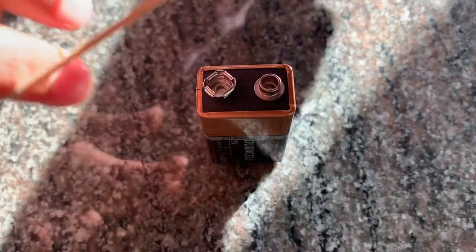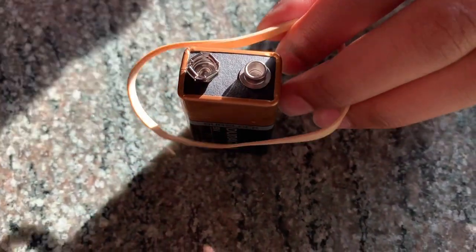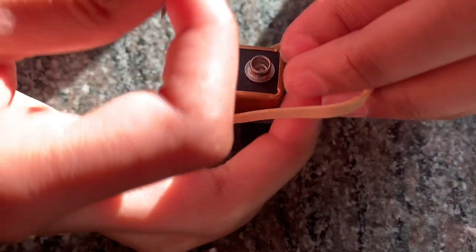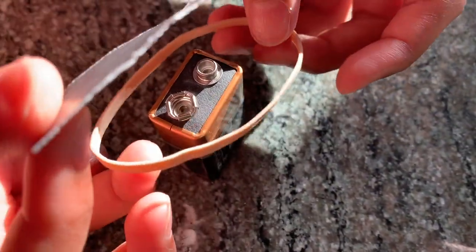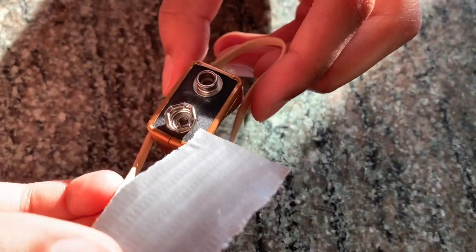So first take your 9 volt battery or similar weight and place the rubber band on both sides and secure the tape over it as shown in the video.